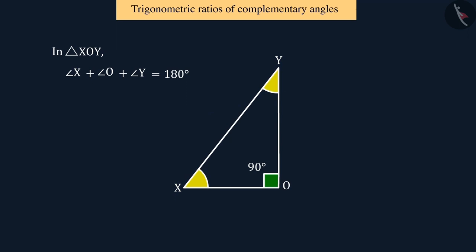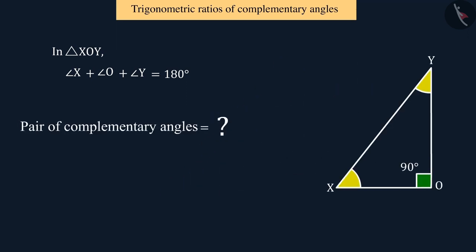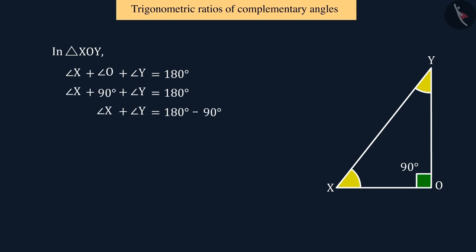So, can you look at the diagram and guess whether there are any pairs of complementary angles here? Yes. Here, angle X and angle Y form a pair of complementary angles. That is, we can say that the value of angle X plus angle Y will be 90 degrees.